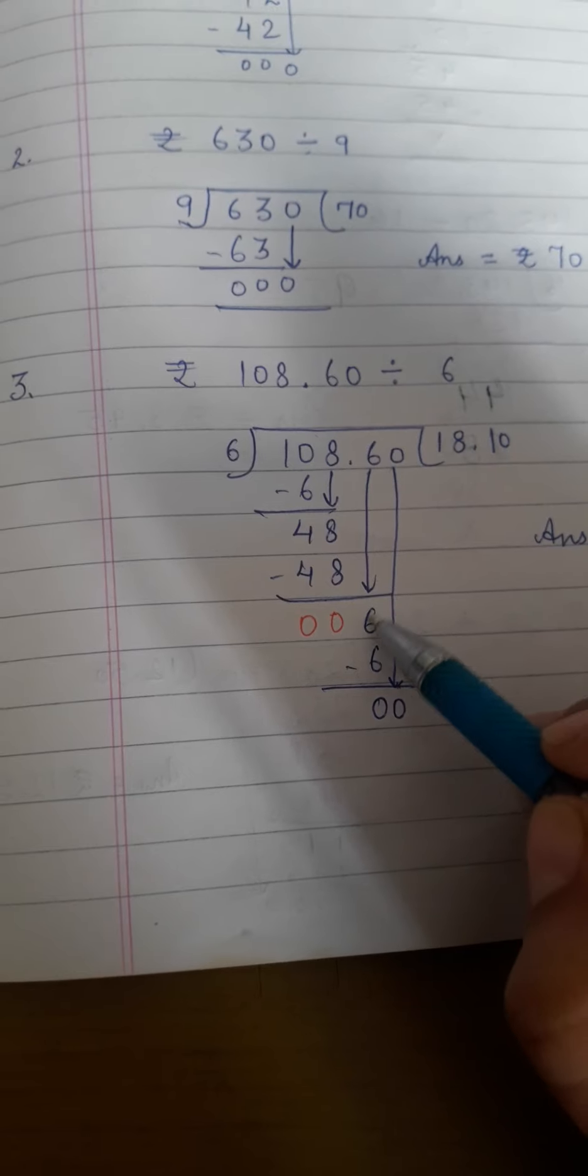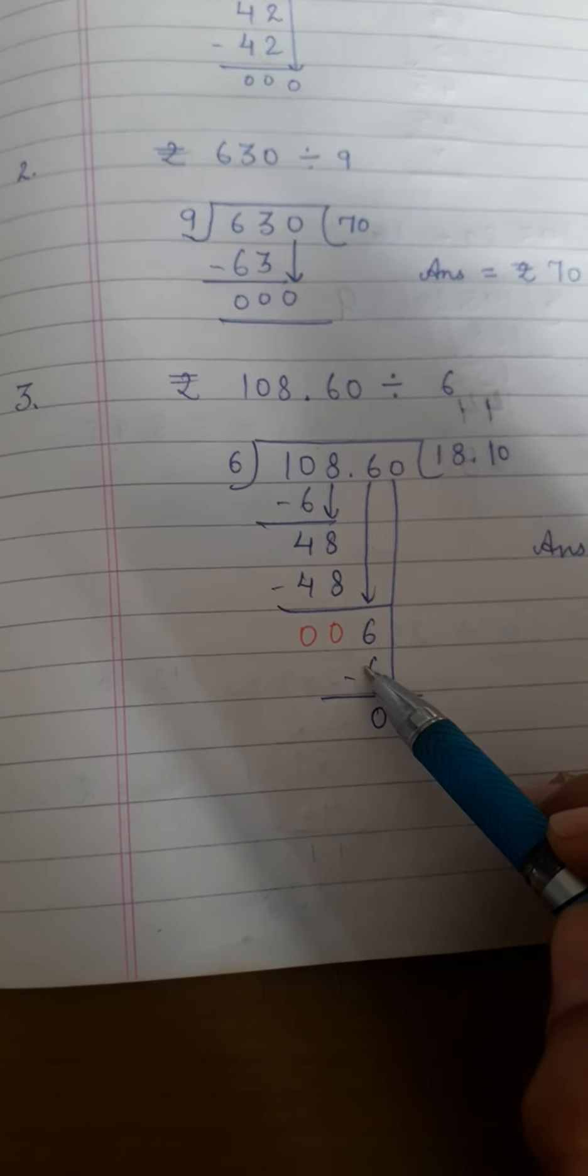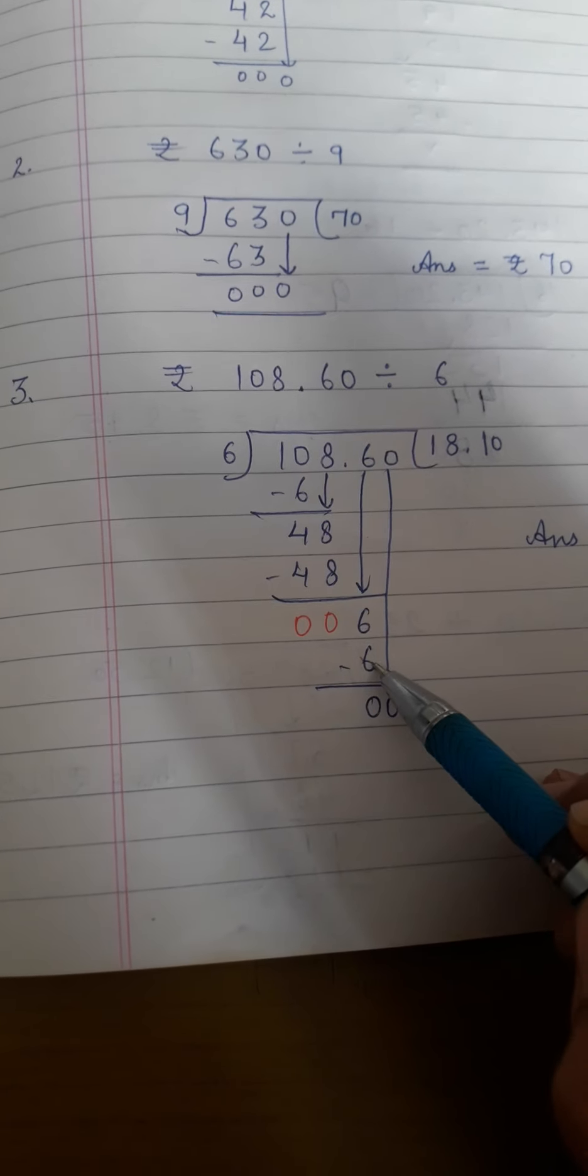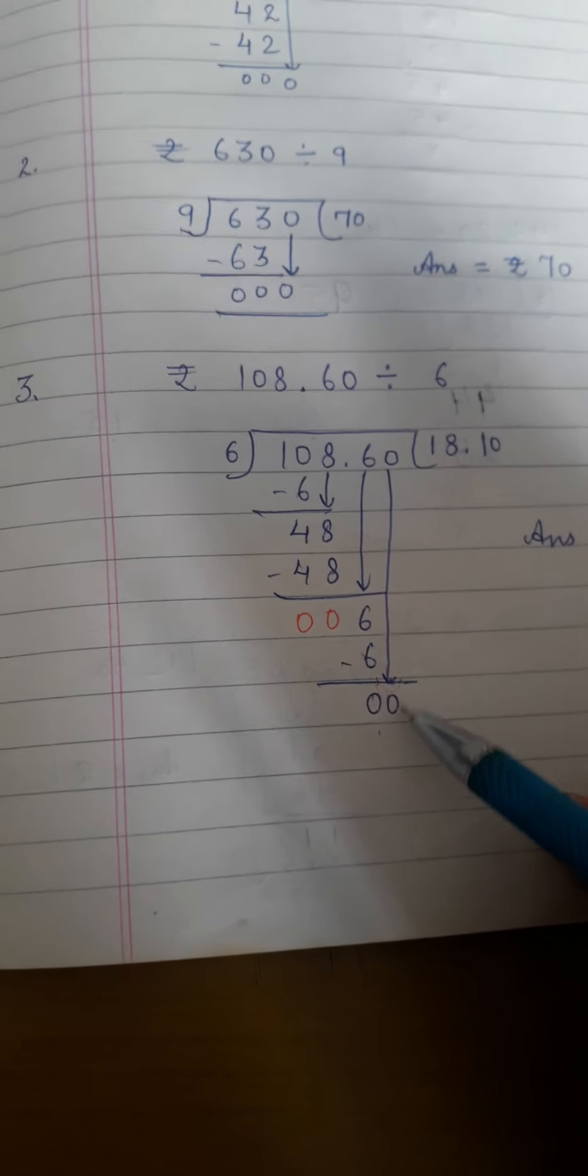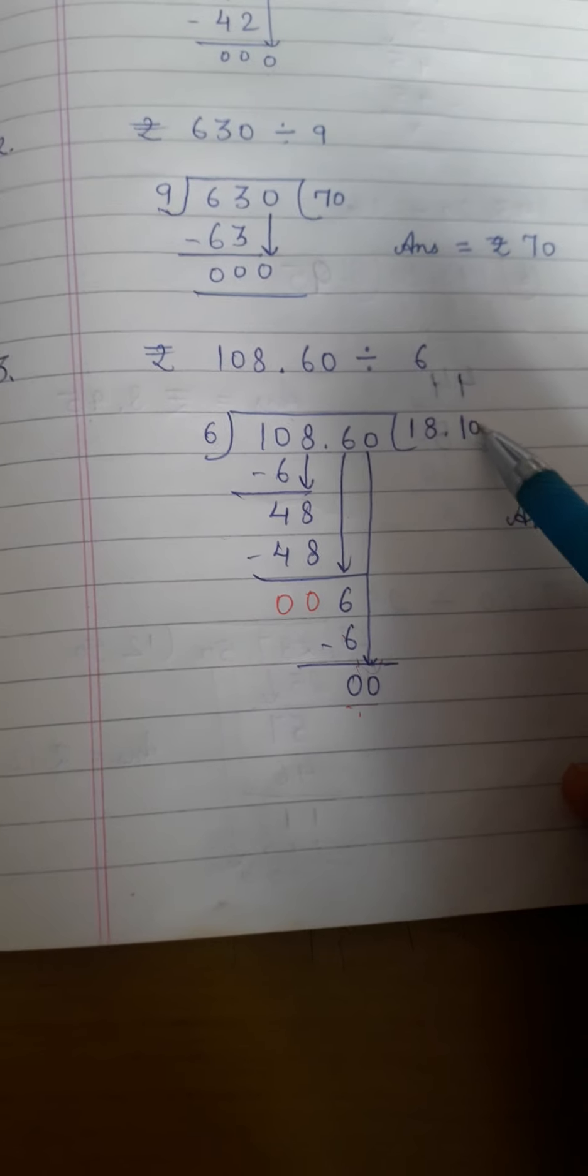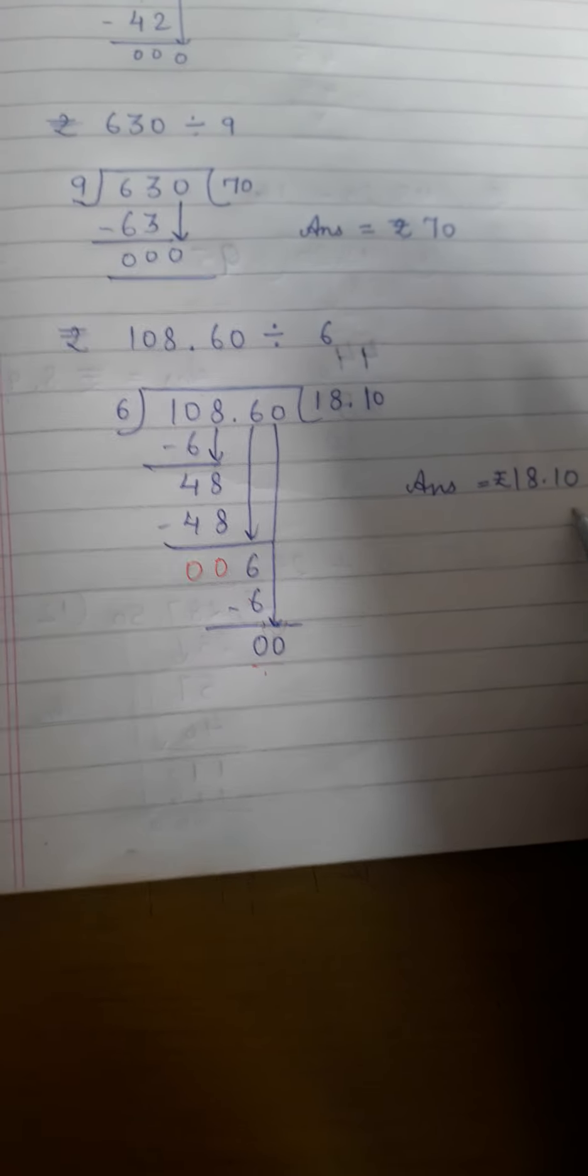Then bring down 6 from top. 6 ones are 6. Minus gives 6 minus 6 is 0. Now we have 0 on top. Bring it down. You cannot divide this. Put it as it is here. Answer is rupees 18 and 10 paisa.